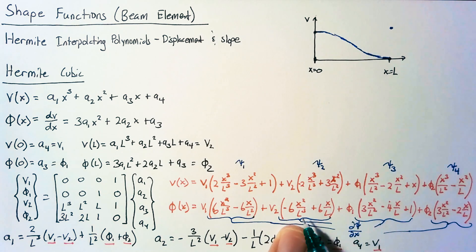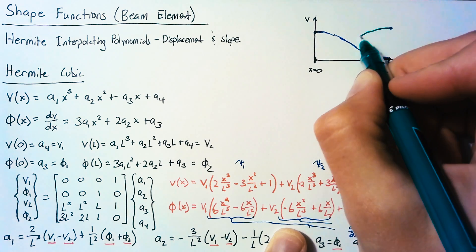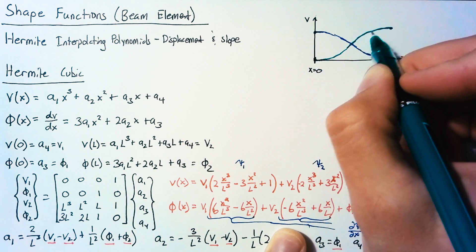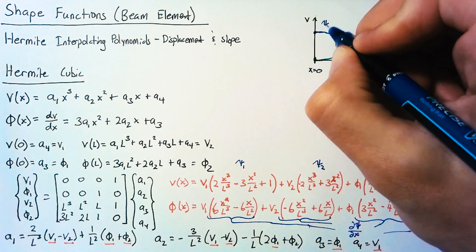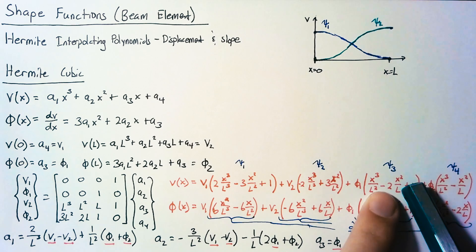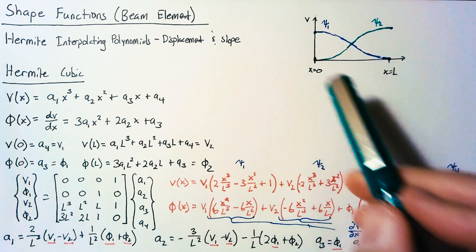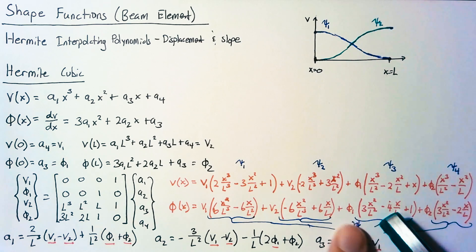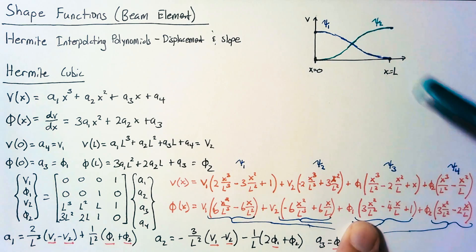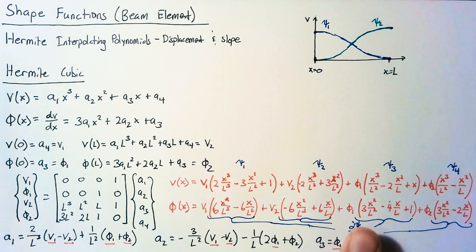Likewise, our slope for psi2 at both x equals 0 and l is going to be 0. And so both of these need to be flat at the ends. Now we already discussed that the position of psi3 and psi4 were going to be 0 at both ends.